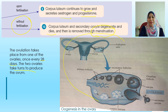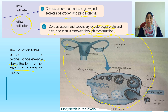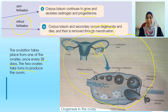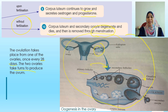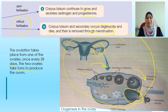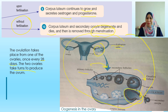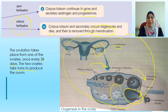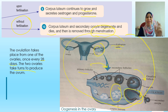This picture shows the process of oogenesis in the ovaries. It starts with the primary follicle, develops into the secondary follicle, then the graafian follicle, and then the ovulation process where the secondary oocyte is released into the fallopian tube waiting for the sperm to undergo fertilization. The remaining graafian follicle becomes the corpus luteum, and whether it grows depends on whether fertilization takes place.